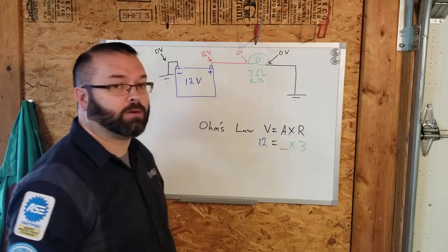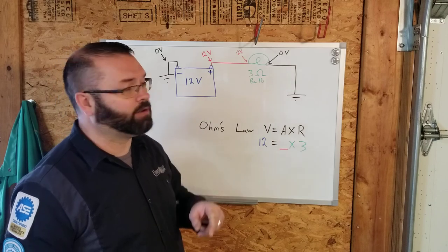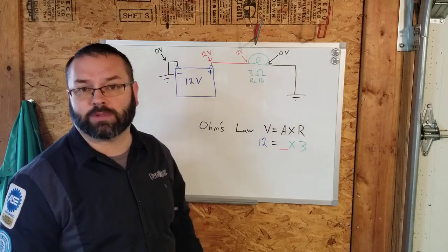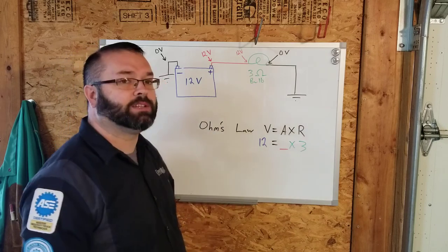You'll notice up here our bulb. Our load in the system has a resistance value. This little guy here, known as Omega, represents Ohm. So it's our resistance. So we have three Ohms of resistance in that light bulb.